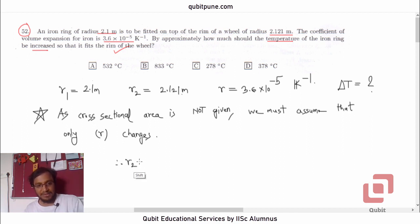So therefore, we can write the basic equation. R2 is equal to R1 into 1 plus alpha delta T. What is R2? 2.121. R1 is 2.1 into 1 plus alpha is given. Now, this is what I was talking about. They have given us gamma. That's coefficient of volume expansion. But here we want to use the coefficient of linear expansion because only radius is changing.